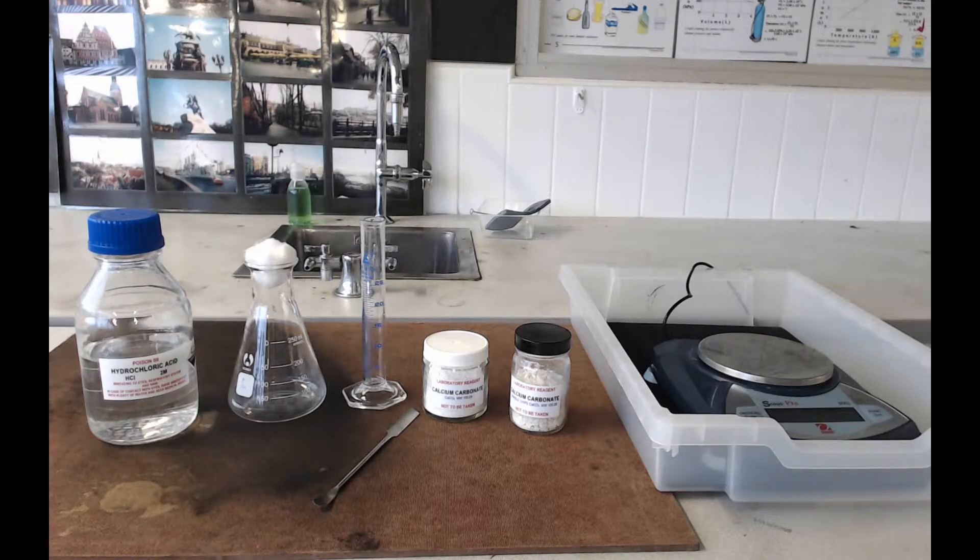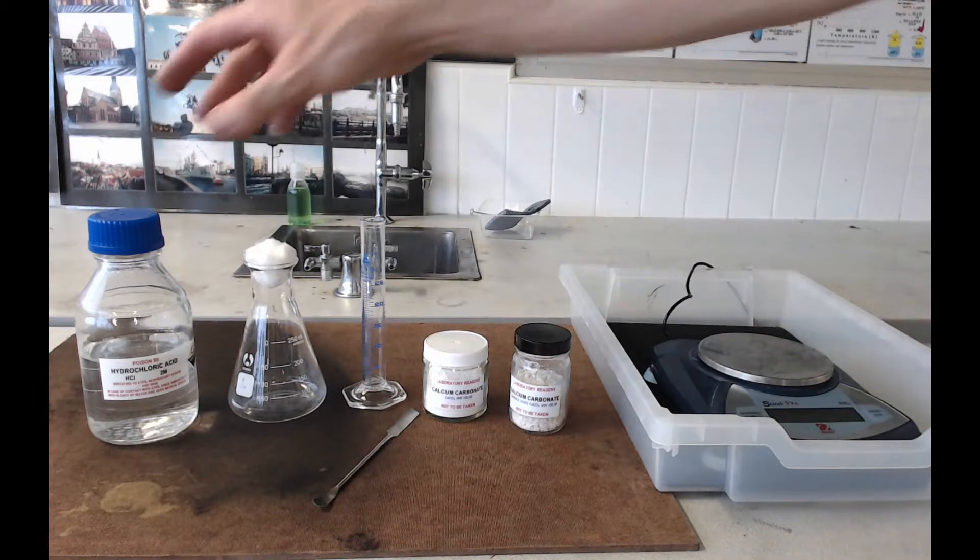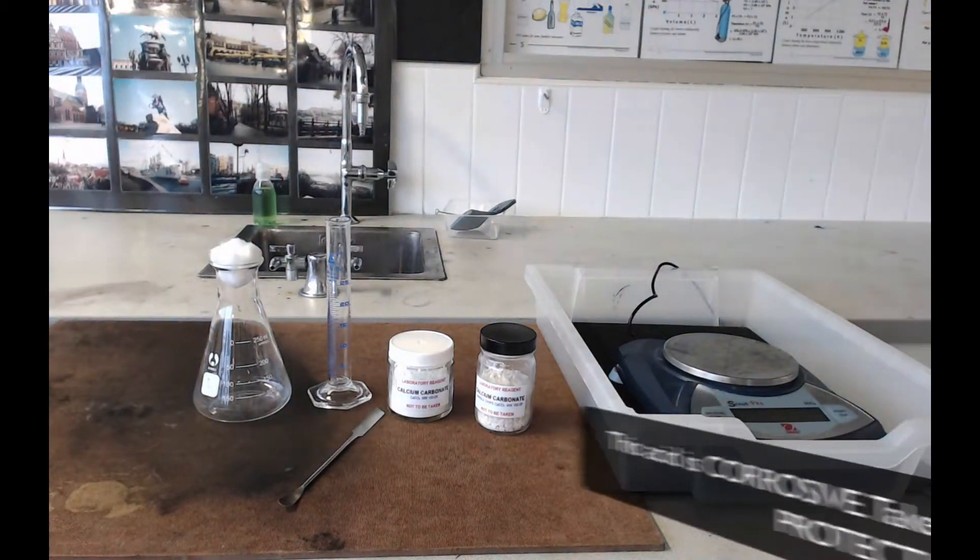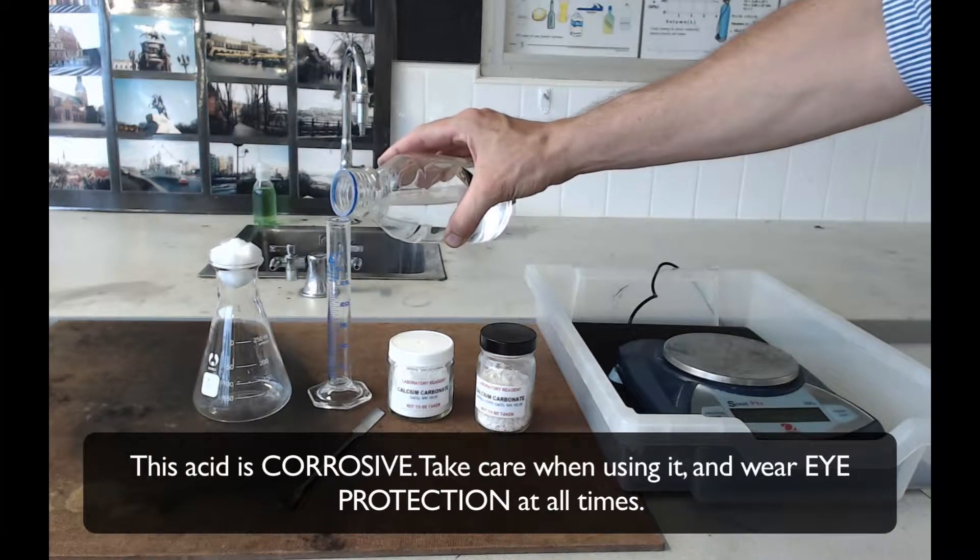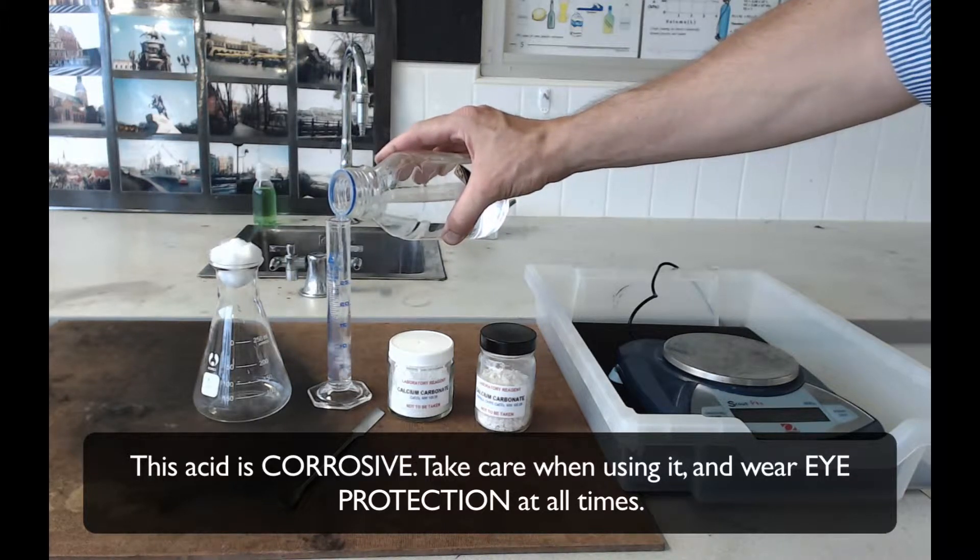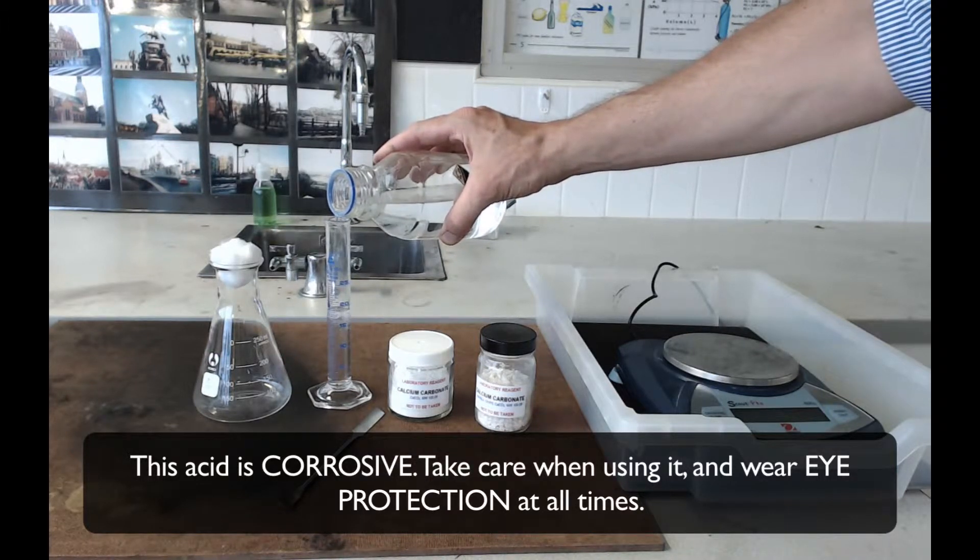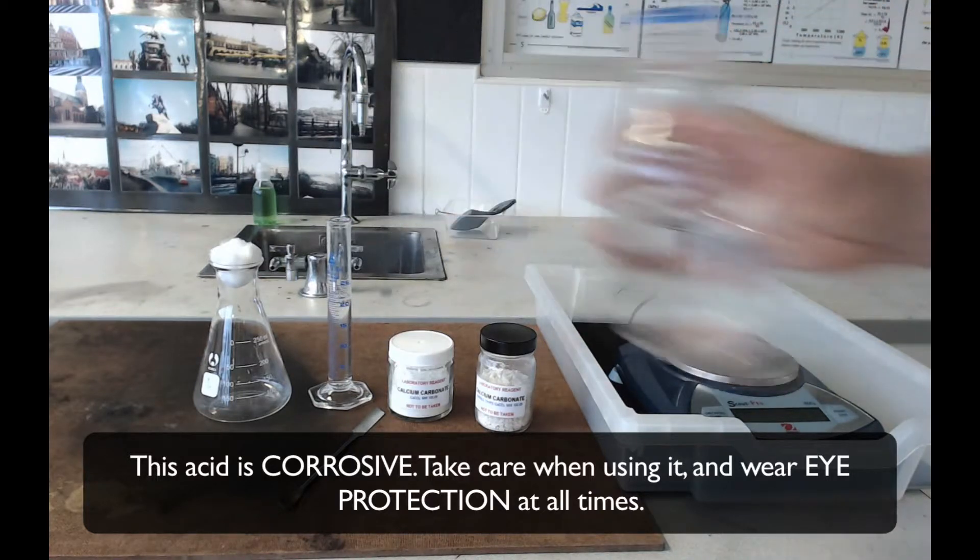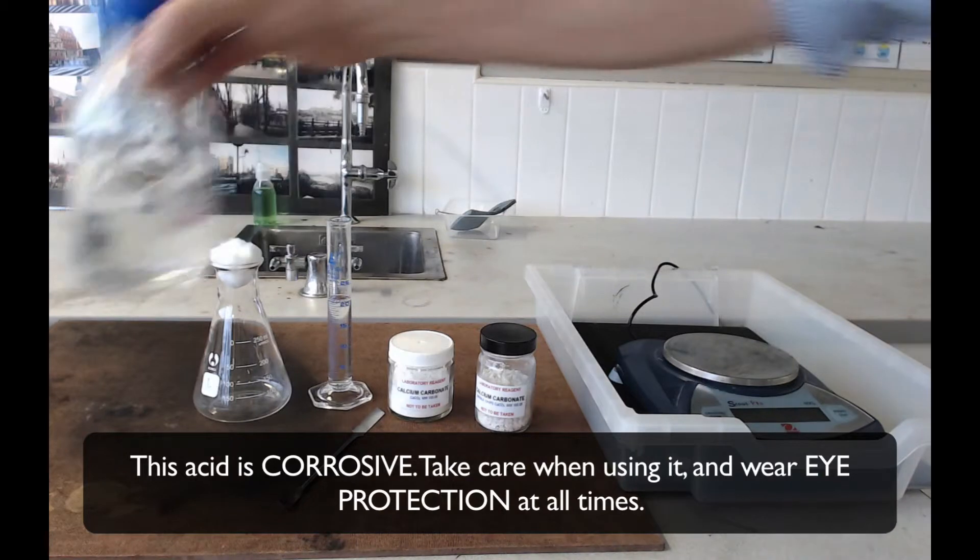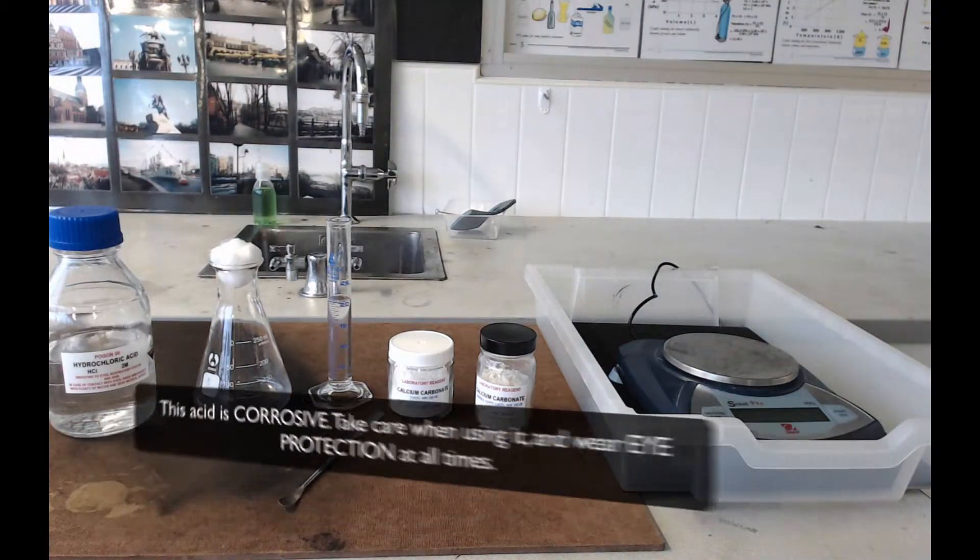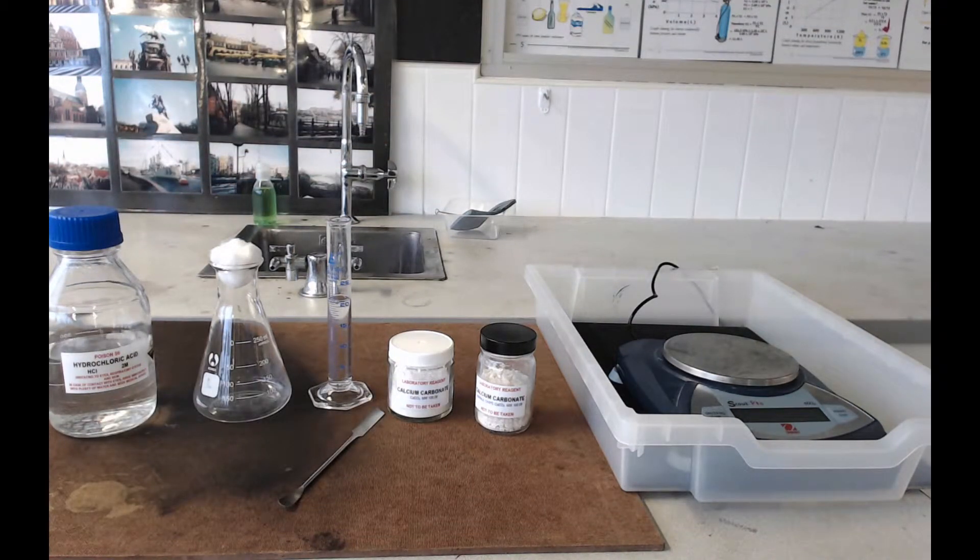Now the first thing to do is to measure out 20ml of hydrochloric acid. So just pour as close as you can to 20ml into your measuring cylinder and just remember if you take a little bit too much, just pour the excess down the sink, don't put it back in the bottle because that could contaminate what's in there.